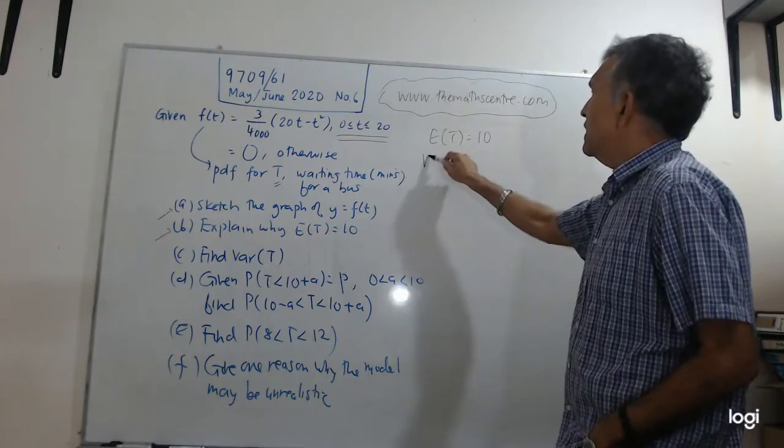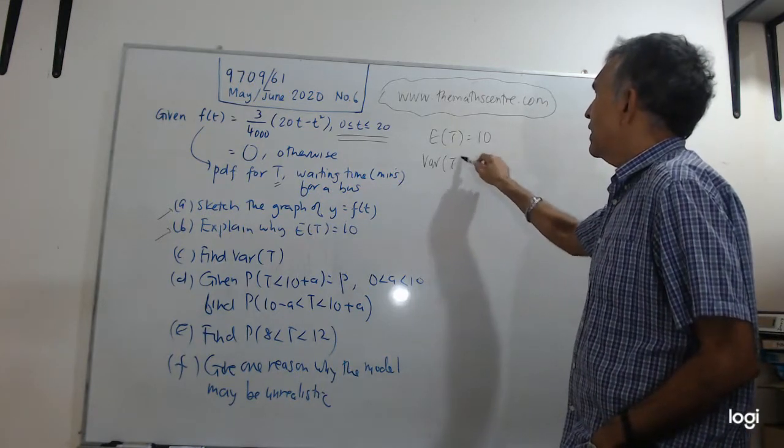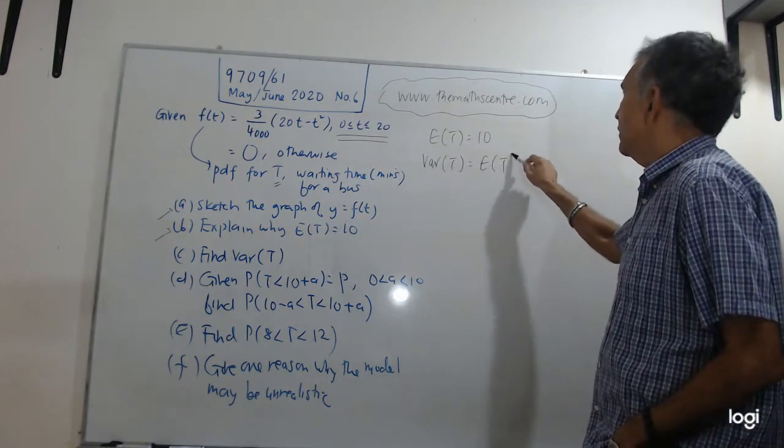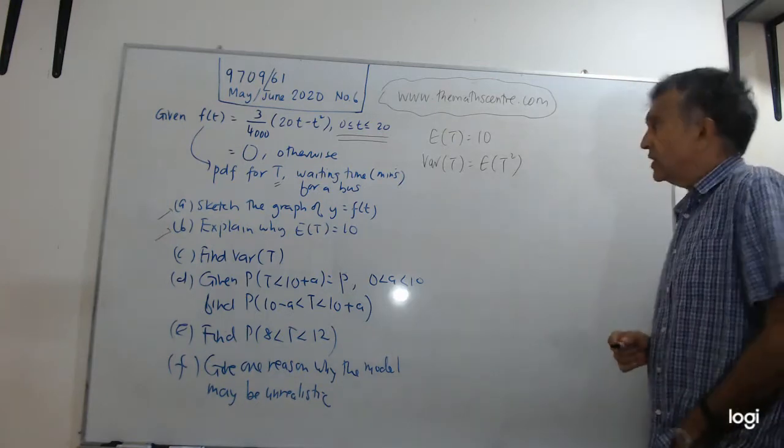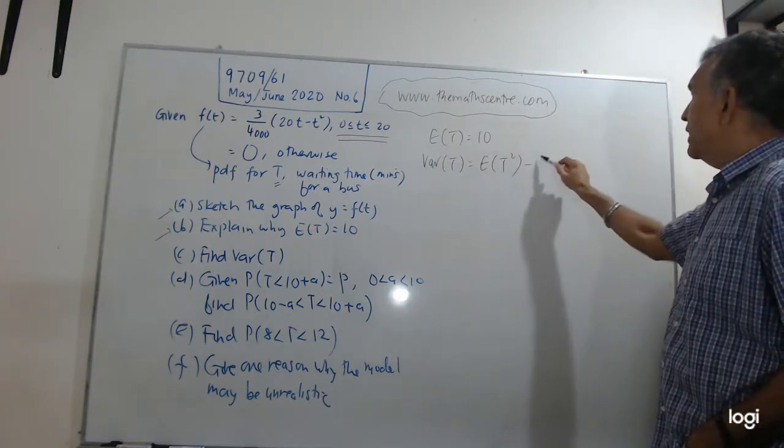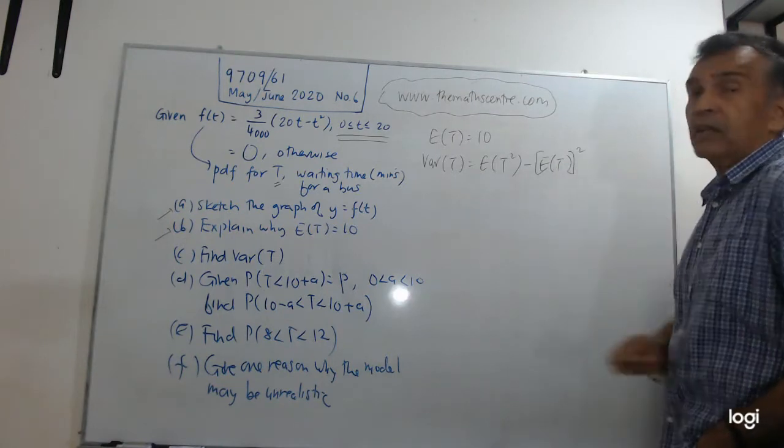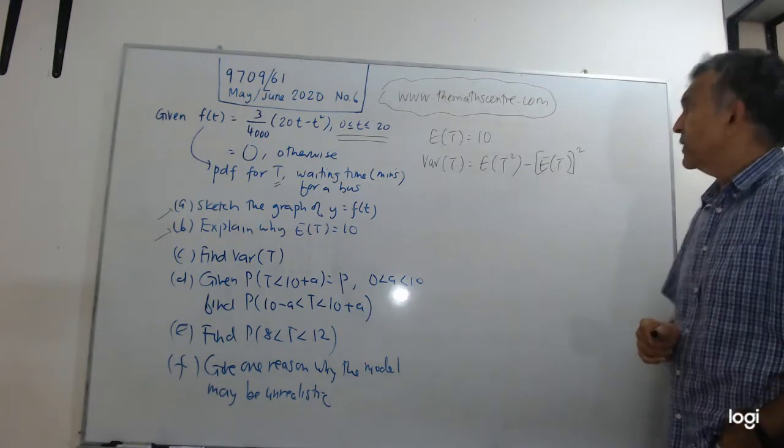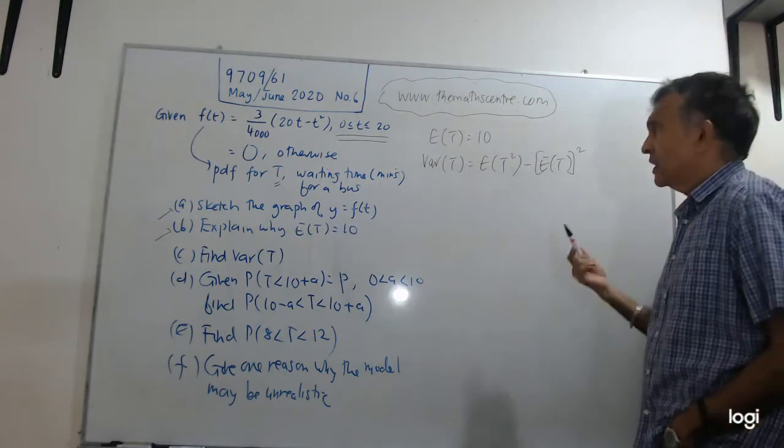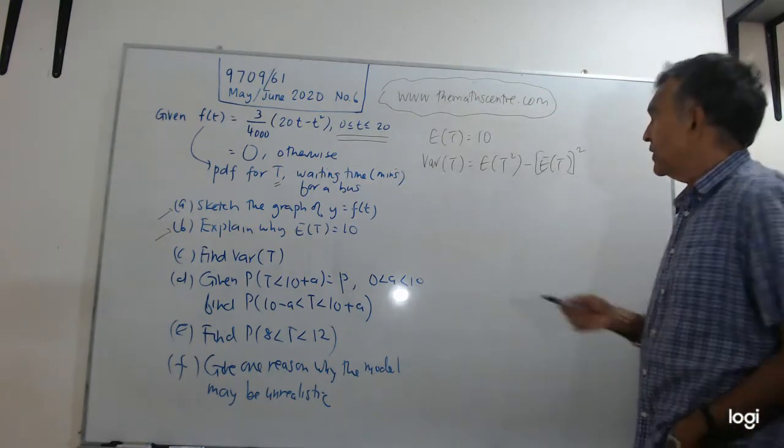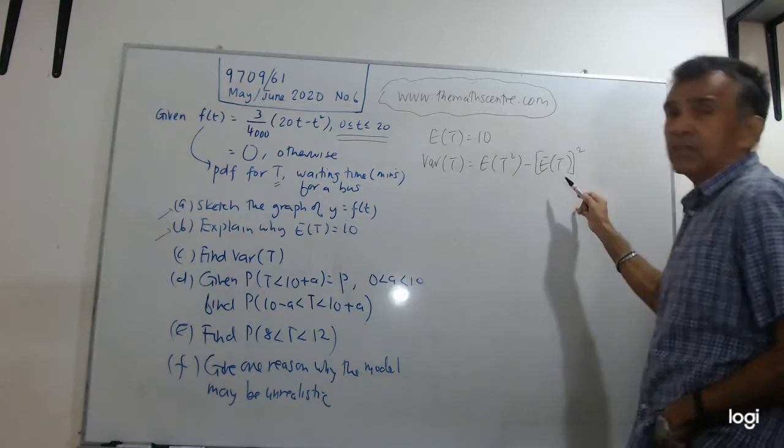Variance of T is quite easy for us because that's my formula: the second moment, the expected value of T squared, minus the first moment squared, the expected value of T holding square. That's a formula that we all know quite well.